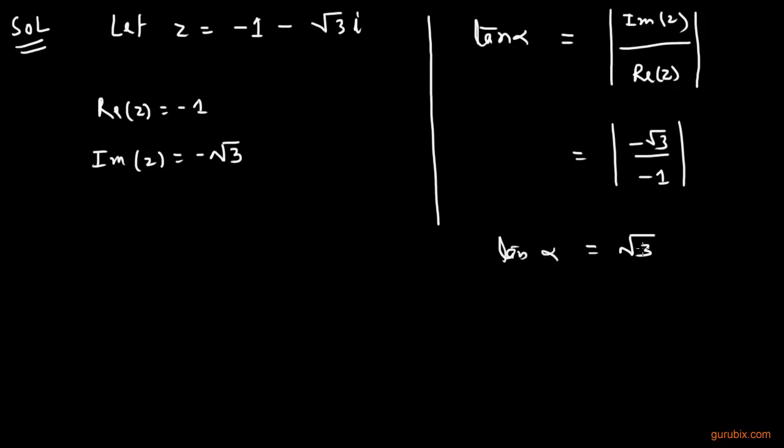If tan alpha is positive root 3, then alpha equals pi by 3, because the value of tan at 60 degrees is square root 3.